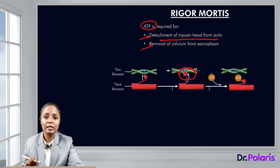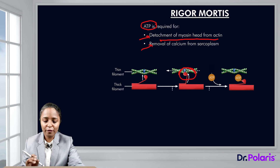This muscle rigidity soon after death is known as rigor mortis, and its mechanism is non-availability of ATP.